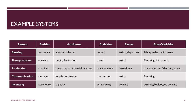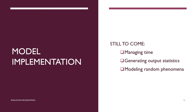In a transportation system, entities would be travelers with attributes for where they come from and where they're going. In production, entities are machines — a machine could have a speed, a capacity, and a time to next breakdown. In a communication network, entities might be messages. In an inventory system, we work with products in a warehouse that might have a capacity, and a state variable might be backlog demand. These are just examples to place us in context.